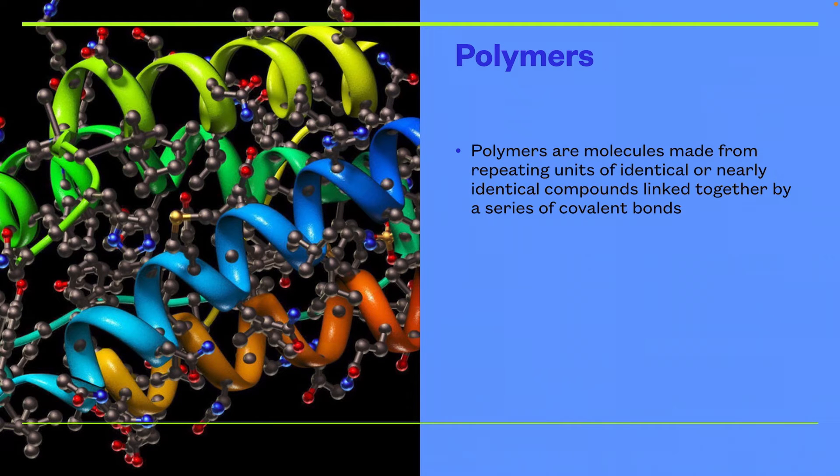Polymers are molecules made from repeating units of identical or nearly identical compounds linked together by a series of covalent bonds. Basically this is what polymers look like, it's pretty interesting honestly.